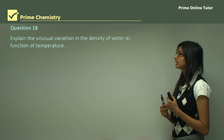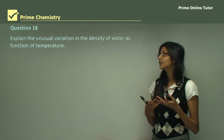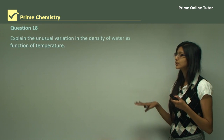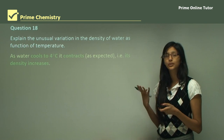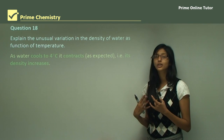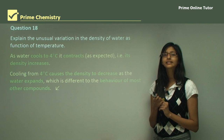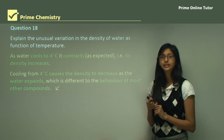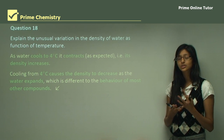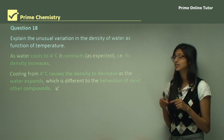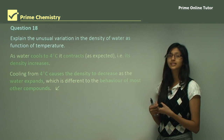Question 18: Explain the unusual variation in the density of water as a function of temperature. As water cools to 4 degrees Celsius, it contracts as expected, and therefore density increases because volume and density are inversely related. At 4 degrees Celsius, water reaches its highest density of 1 gram per centimeter cubed. However, cooling below 4 degrees Celsius causes the density to decrease as the water expands, which is different from the behavior of most other compounds. This is because ice must exist in a tetrahedral array to maintain its crystalline lattice, so it takes up much more volume than liquid water and therefore has a much lower density.